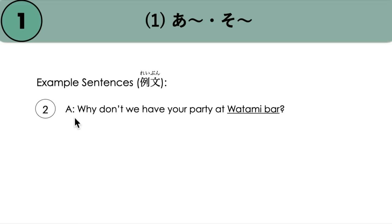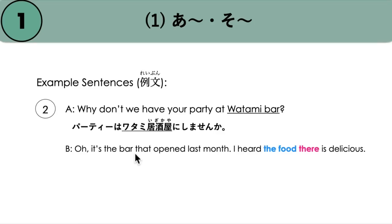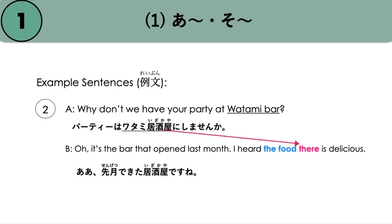Next example: A-san says, 'Why don't we have your party at Watami bar?' — Paati wa Watami izakaya ni shimasen ka? B says, 'Oh, it's the bar that opened last month.' So here it shows that B knows about the bar A is talking about and has information about it. Since B knows the bar, we use the prefix A, so soko becomes asoko. Asoko no ryouri wa oishisou desu ne — 'I heard the food there is delicious.'